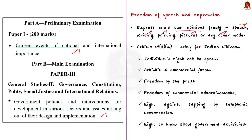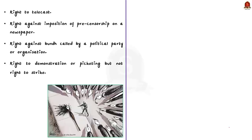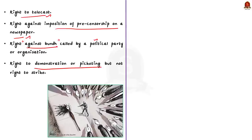In India, under Article 19(1)(a), the Constitution of India guarantees to all its citizens the right to freedom of speech and expression. Remember, this right is solely for Indian citizens and not for any foreign nationals. The right to speech includes not only the individual's right to speak, but also the individual's right not to speak. The artistic and commercial forms of speech and expression are also included in this right.